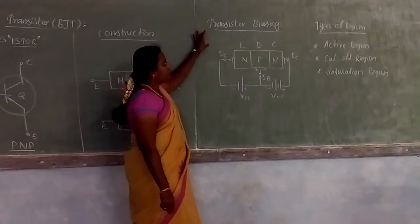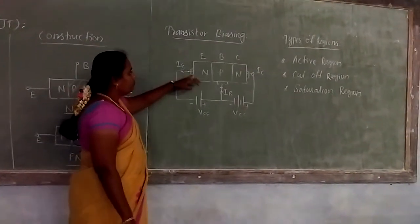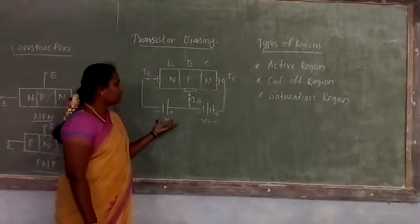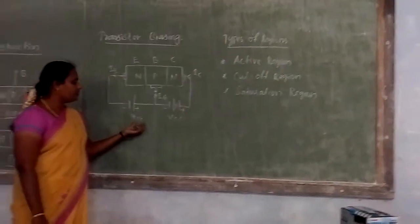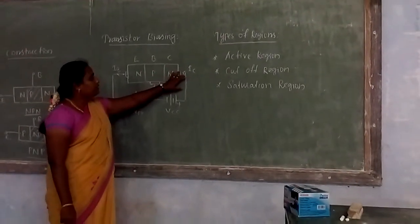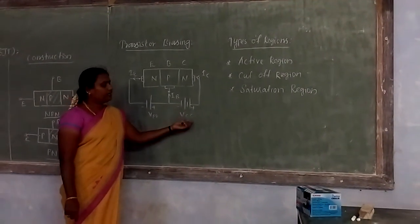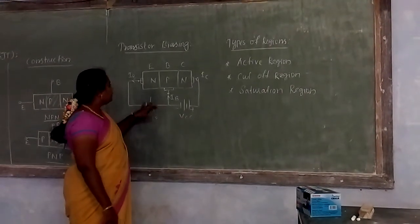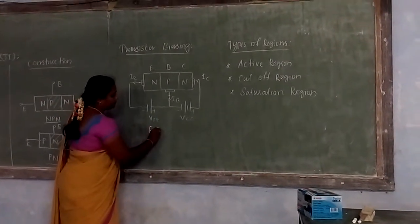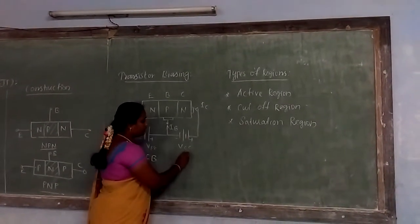Next we see transistor biasing, taking the NPN transistor. The emitter and base terminals are connected in forward biasing with a supply voltage VEE. The base and collector terminals are connected in reverse biasing with a supply voltage VCC. So, the emitter-base junction is forward biased and the base-collector junction is reverse biased.